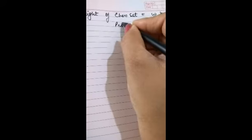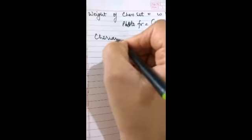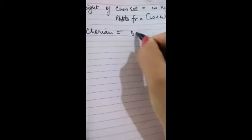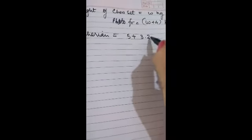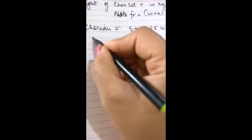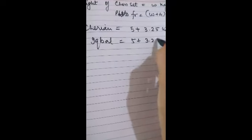Question number 15. The weight of chest set is let it be W kg. Then the weight of the photo frame will be W plus 4 kg. Thus how much Charian has to pay? Charian will have to pay will be 5 plus 3.25W and what Iqbal has to pay will be equal to 5 plus 3.25 into W plus 4.